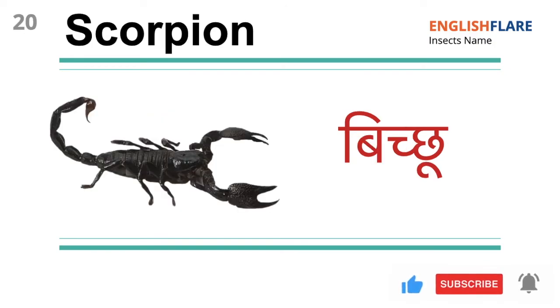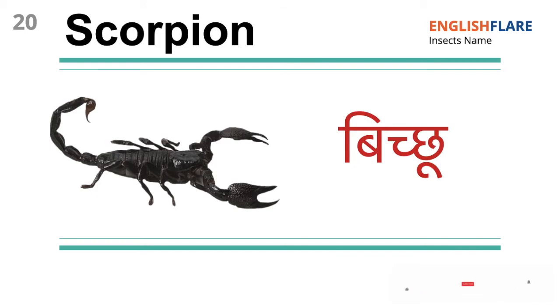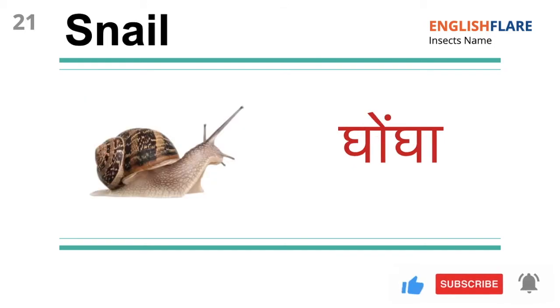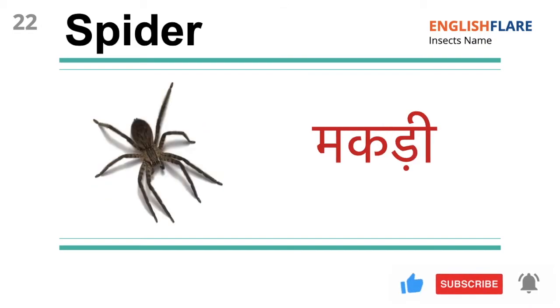Scorpion: Bichu. Snail: Ghonga. Spider: Makkdi.